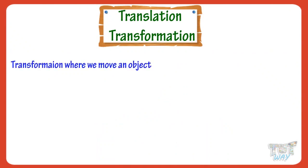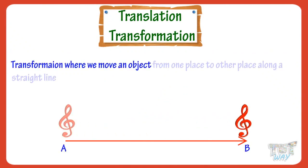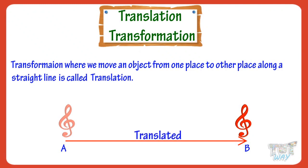Transformation where we move objects from one place to other place along a straight path is called translation. We move this sign from position A to position B. So we say we translated this sign from position A to position B.